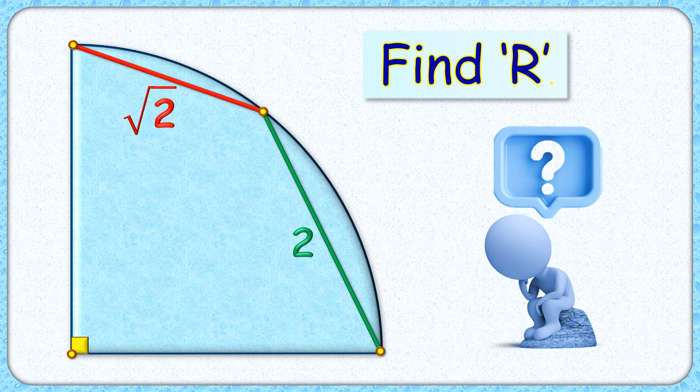Welcome everyone. This question given to us is a quadrant with length of this green chord and red chord as 2 and root 2 centimeter. The exciting part is with this limited data we have to find the radius of the quadrant.